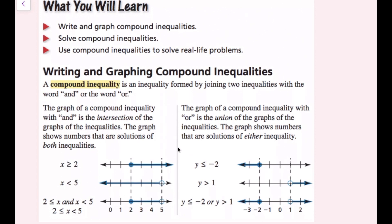The graph of a compound inequality with OR is the union of the graphs of the inequalities. The graph shows the numbers that are solutions of either inequality. So here we have Y ≤ -2 and Y > 1. The OR statement means if it's a solution of one of them, then it's a solution of the OR statement.